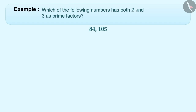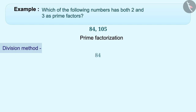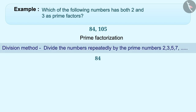Next example: which of the following numbers has both 2 and 3 as prime factors? To find the solution, we have to do prime factorization of 84 and 105. Let's first do the prime factorization of 84 by the division method. In this method, we divide the number with prime numbers like 2, 3, 5, 7, etc., again and again. The smallest prime number is 2.